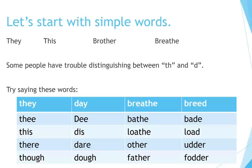Let's start with simple words: they, this, brother, breathe. Some people have trouble distinguishing between TH and D. Try saying these words: they / day, the / dee, this / dis, their / dare, though / doe, breathe / bathe, bathe, loathe / load, other / utter, father / fodder.